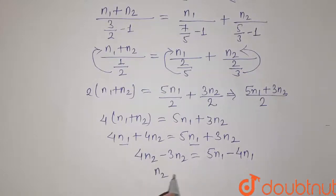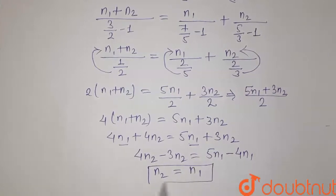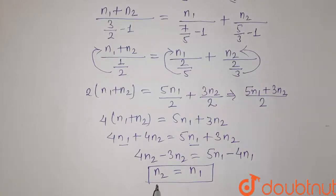So N2 equals 5N1 minus 4N1, which equals N1. So we have N2 equals N1.